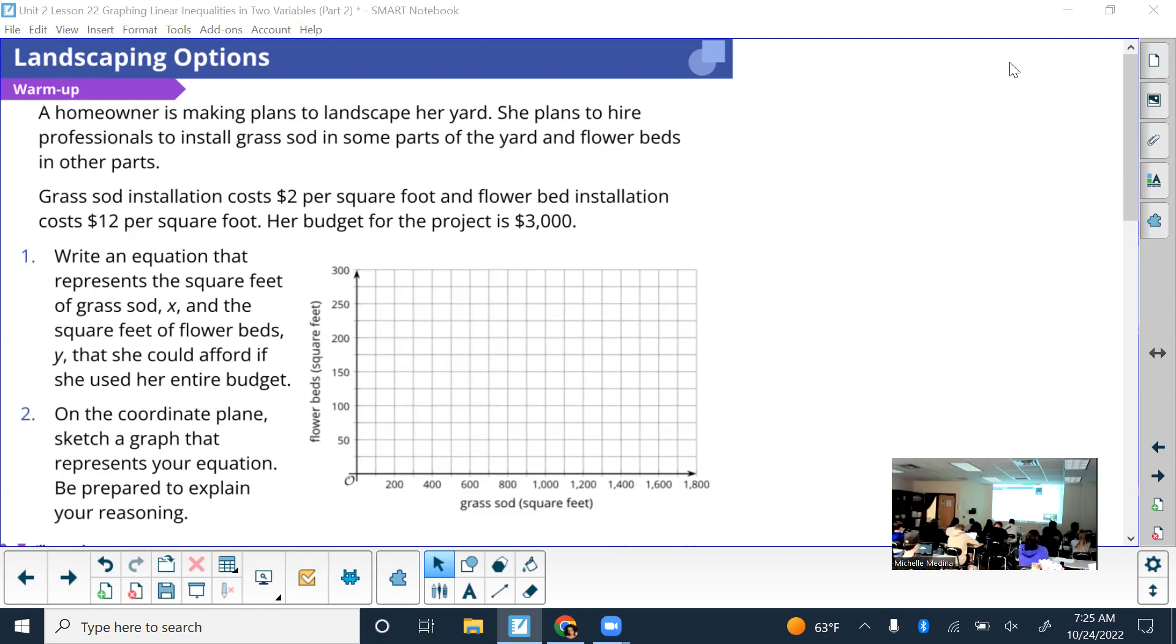All right, so let's go over it now and let's employ those strategies that I told you about. So any type of word problem, kind of see what it's asking for. It wants you to write an equation. What do equations have? An equal sign. So if you were like making an inequality, you know I can see how you might think that with the budget being three thousand, but it wants an equation, have an equal sign in there.